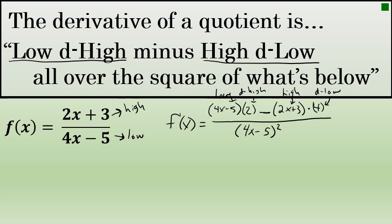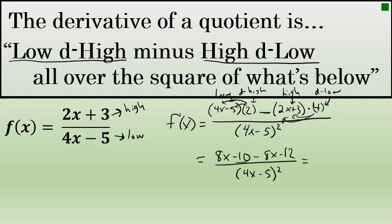To complete this derivative, let's do a little simplifying. In the numerator, I'll distribute 2 times the quantity 4x minus 5 and write that as 8x minus 10. I'll also distribute negative 4 to get negative 8x minus 12. Combining like terms, 8x minus 8x is 0, and negative 10 minus 12 is negative 22. So the derivative of f of x is negative 22 over 4x minus 5 squared.